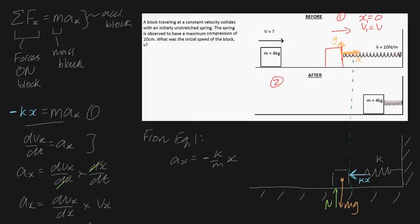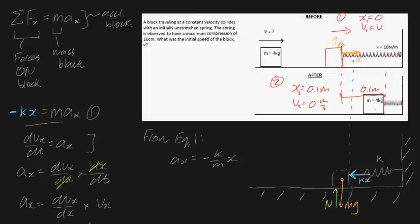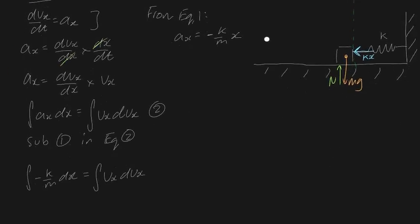For state two, when the spring is fully compressed, x₂ equals 10 centimeters — 0.1 meters — because that's the distance moved from contact to full compression. And this is the key insight: v₂ equals 0 meters per second, because at maximum compression the block has stopped for an instant. It still has acceleration but no velocity, and the instant after, it starts moving left as the spring pushes it back.